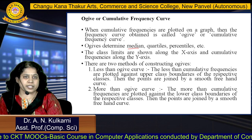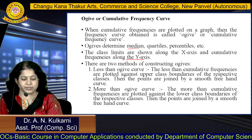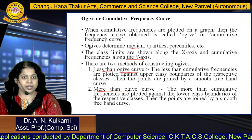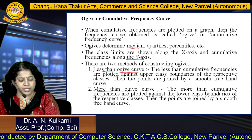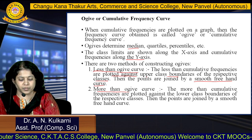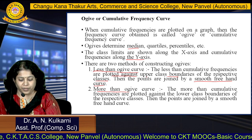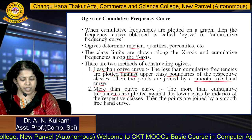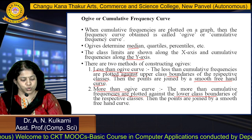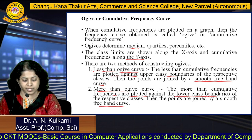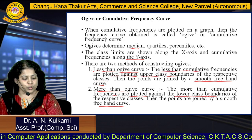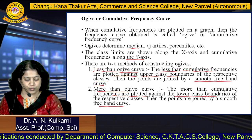The class limits are shown along the x-axis and cumulative frequencies along the y-axis. There are two methods for constructing the ogive curve. First is the less than ogive curve, and second is the more than ogive curve. For the less than ogive, cumulative frequencies are plotted against the upper class boundaries of the respective classes, and the points are joined by a smooth freehand curve. For the more than ogive, cumulative frequencies are plotted against the lower class boundaries, also joined by a smooth freehand curve.